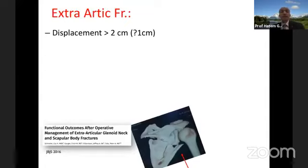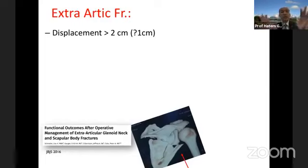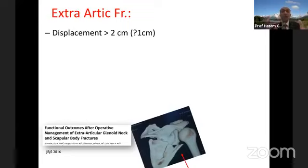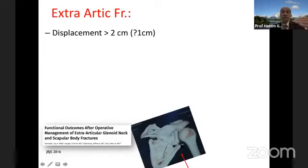Extra-articular fractures are much more common and were not being treated before. New indications tell us we should fix them, because muscles — the subscapularis anteriorly, infraspinatus, teres minor, and supraspinatus — are all working on the shoulder. If they have a displaced bone in the way, it will affect their function. The indication for the medial border is 2cm displacement — some newer literature is moving toward 1cm — but 2cm currently stands.